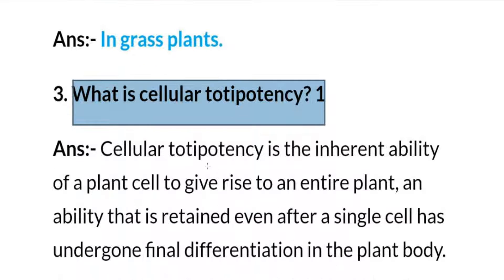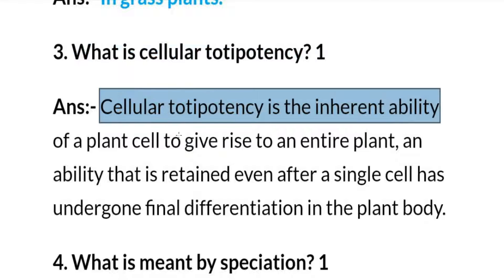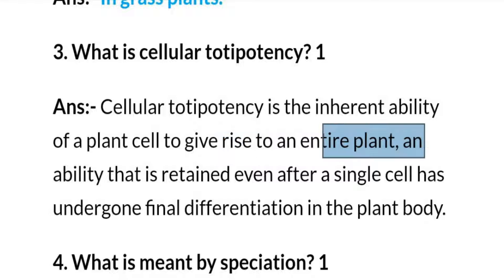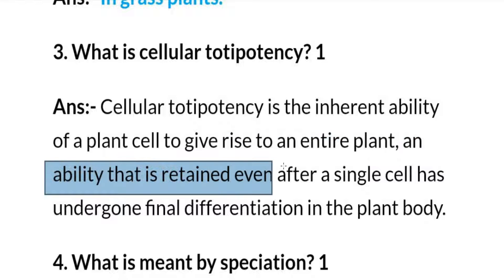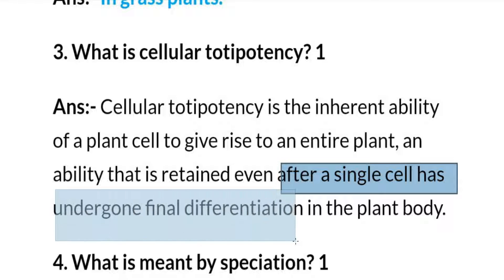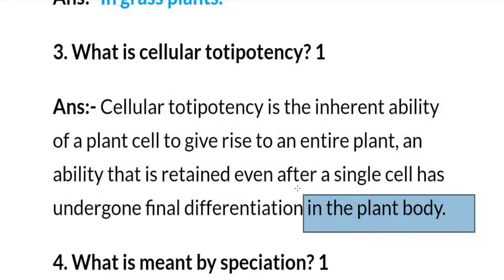What is cellular totipotency? Cellular totipotency is the inherent ability of a plant cell to give rise to an entire plant, and this ability is retained even after a single cell has undergone final differentiation in the plant body.